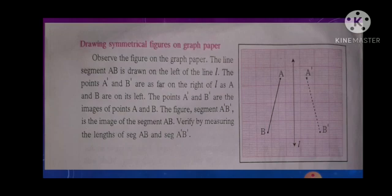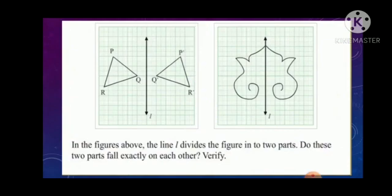The figure segment A'B' is the image of segment AB. Verify by measuring the lengths of segment AB and segment A'B'. Children, now here line L is acting as a mirror or we can say it's a line of symmetry. So A'B' is the image of segment AB. In the figures above, the line L divides the figure into two parts. Do these two parts fall exactly on each other? Verify.